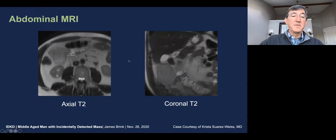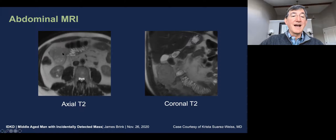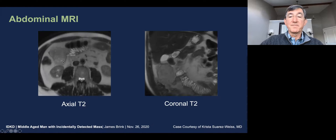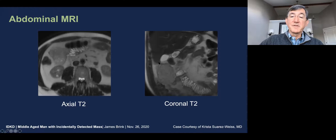T2 weighted imaging transaxial shows us the same mass, which is somewhat heterogeneous, predominantly hypo-intense relative to the cerebrospinal fluid, although there are a few scattered areas of hyperintensity. On the coronal T2 weighted image, we see a small pedicle to the adjacent right lobe of the liver.